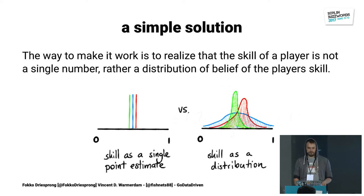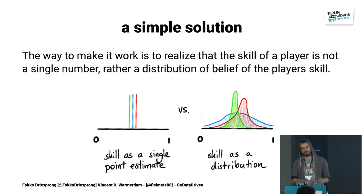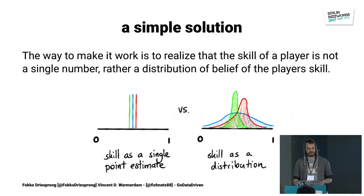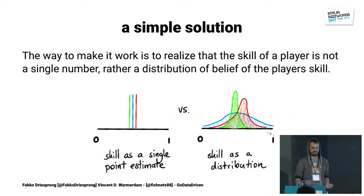One thing you might want to do when estimating the skill of a player is quantify it into a number — say between 0 and 1. People that are very bad get pushed towards 0, people that are super good get pushed to 1. A common flaw is that you really see this as a single number. It might actually be more useful that instead of your state being a single number, you actually keep track of the distribution of belief instead.